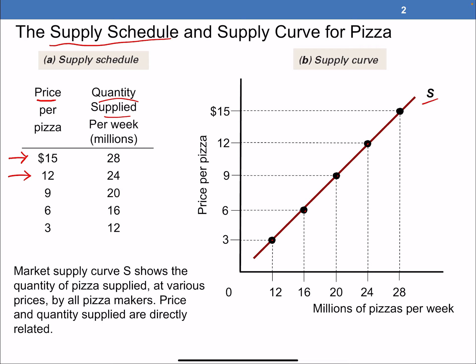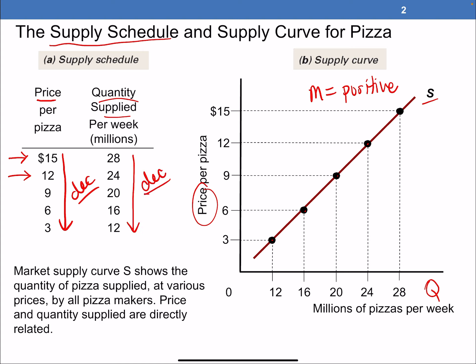Notice this time, unlike demand, if we were to calculate the slope of our line it would have a positive value — we say it's upward sloping. This means my variables of price and quantity move in the same direction. As we move down and price decreases, quantity supplied also decreases. There is a direct, or positive, relationship between price and quantity supplied.